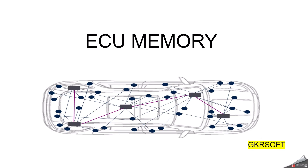In our previous video, we discussed about what is ECU, the functionalities of ECU and the working principle of ECU. ECU is an electronic control unit. It's a small device in a vehicle body that is responsible for controlling a specific function.